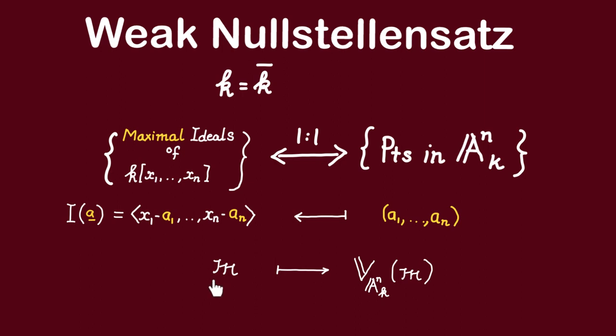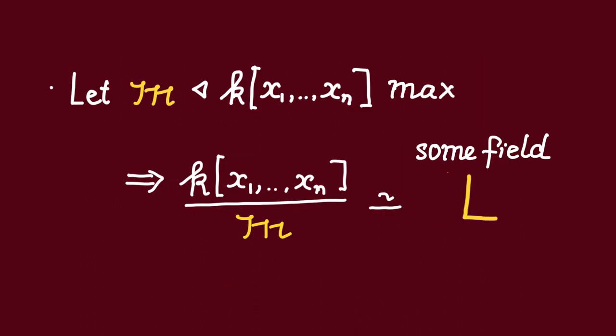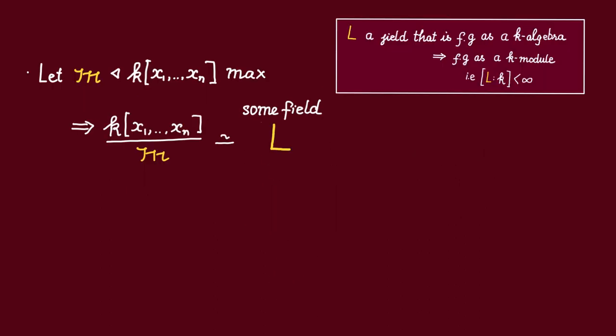Indeed, let m be a maximal ideal of this polynomial ring. Then, as before, we take the quotient of the polynomial ring by m, and that should give us some field. Observe that this field is finitely generated as a k-algebra.